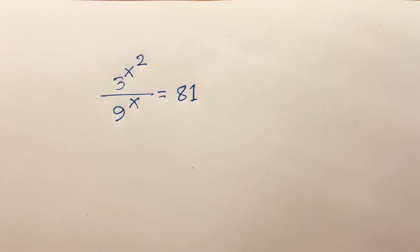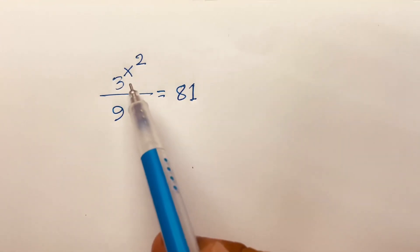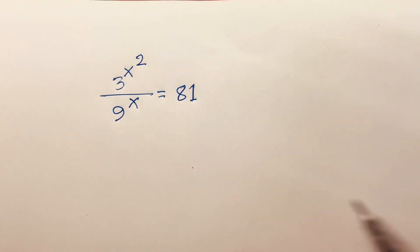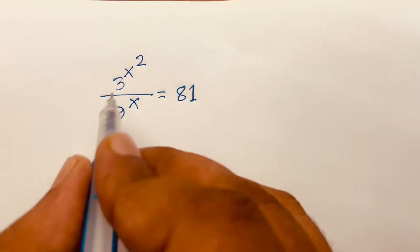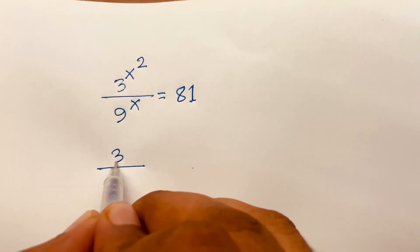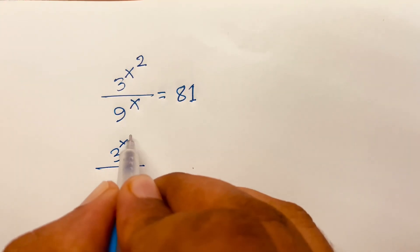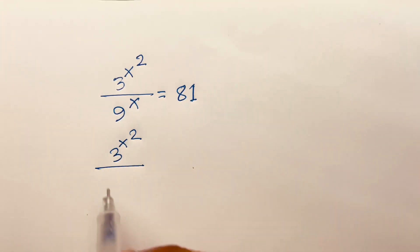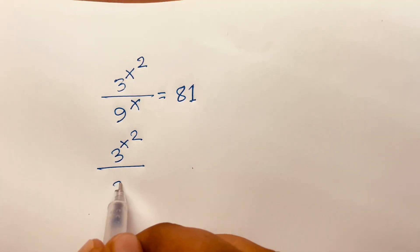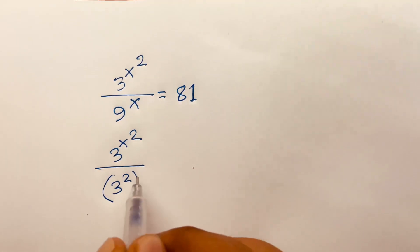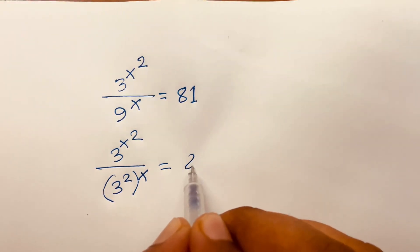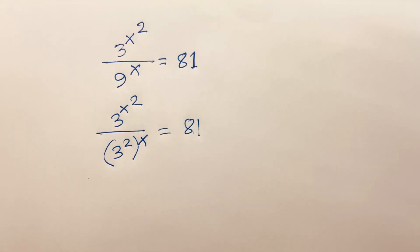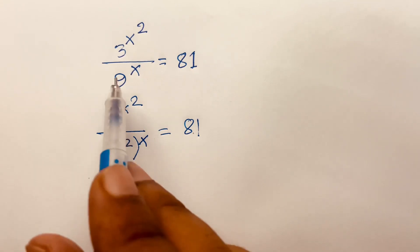Hello everyone. How to solve this exponential equation: 3 power x squared over 9 power x is equal to 81. First of all, I can say here is 3 power x squared and 9 power x — it will be 3 power 2, bracket power x, is equal to 81. We know that 3 times 3 it will be 9.